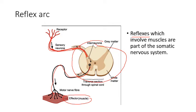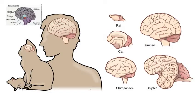Reflexes, like the knee jerk shown here, involve muscles, and so this type of reflex is part of the somatic nervous system. The somatic nervous system is one that involves muscles, and it's actually not the one we're most interested in. The brain stem is present in lots of different organisms because it's part of most brains.